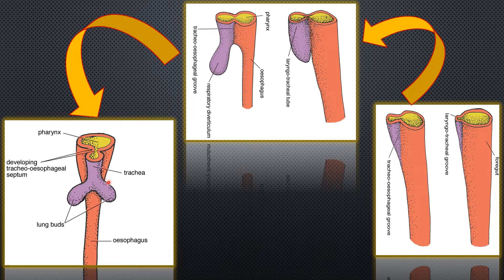The laryngotracheal tube is surrounded by the splanchnic mesoderm. Whereas, the foregut tube is endoderm. This laryngotracheal tube is surrounded by splanchnic mesoderm, and this is going to form the connective tissue, cartilage, and the trachealis muscle.